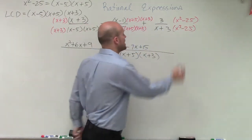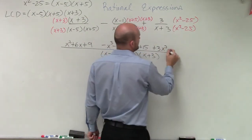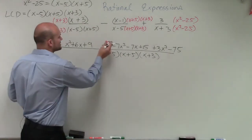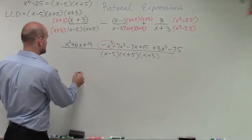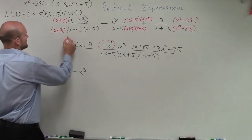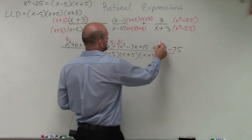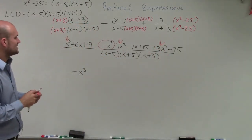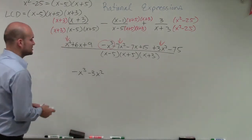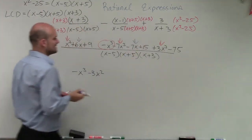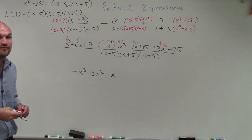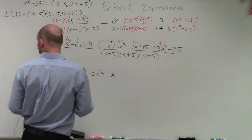Over here, we're just applying the distributive property: 3 times x squared is 3x squared, and 3 times negative 5 is negative 15. Now let's combine our like terms. For x cubed, we only have one and it's negative: negative x cubed. For x squared terms: x squared, negative 7x squared, and positive 3x squared gives negative 3x squared. For the linear terms, positive 6x and negative 6x gives negative x. Then 9 plus 15 is 24, minus 75, which gives negative 51.